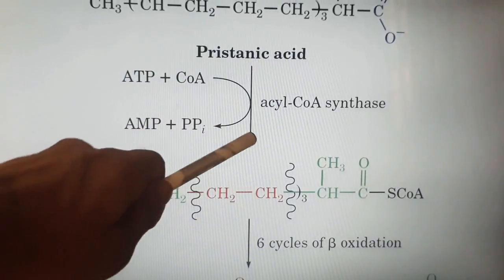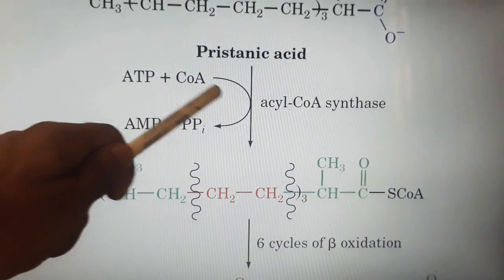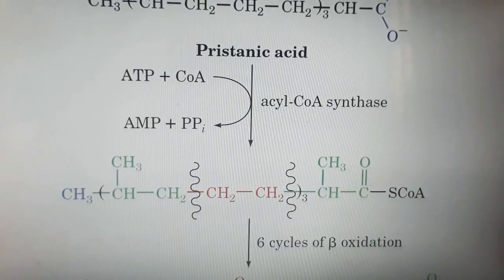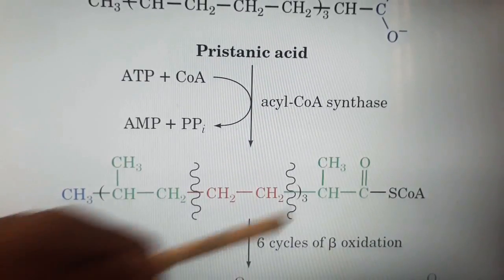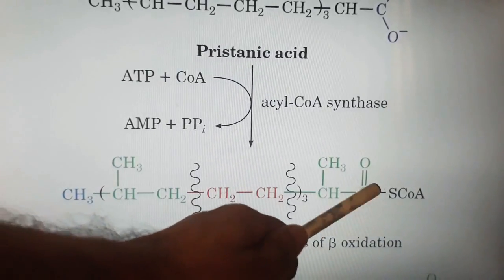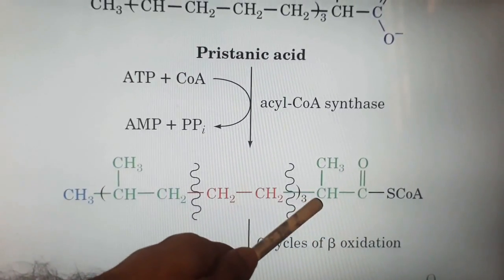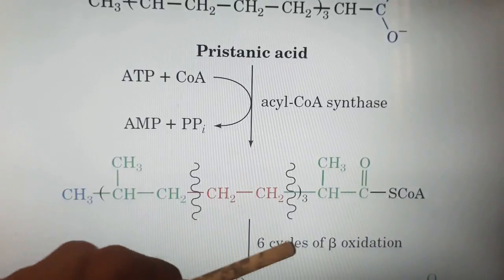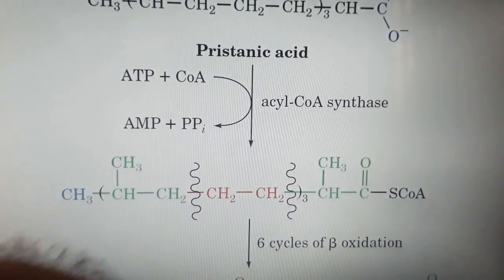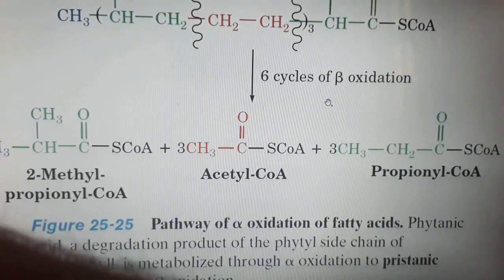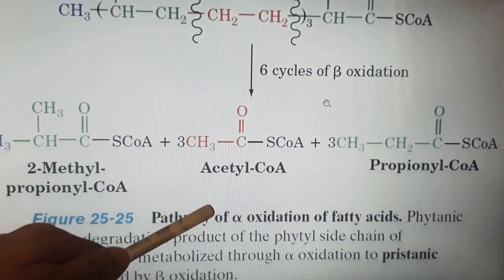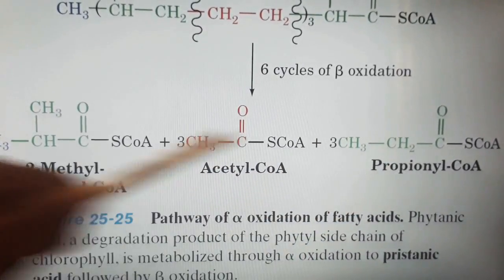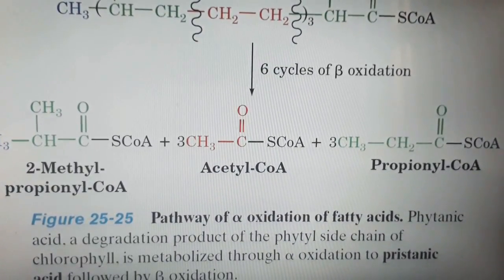In the next step, pristanic acid is converted by adding coenzyme A via the enzyme acyl-CoA synthase. ATP plus coenzyme A gives CoA attached to the product, and ATP gives AMP plus pyrophosphate. Now this product has a beta carbon with no methyl group on it. Therefore, six cycles of beta oxidation can be performed on this fatty acid, giving the result of three acetyl-CoA, three methyl-propionyl-CoA (propionyl-CoA). This is the overall product formed by the alpha oxidation of fatty acids.